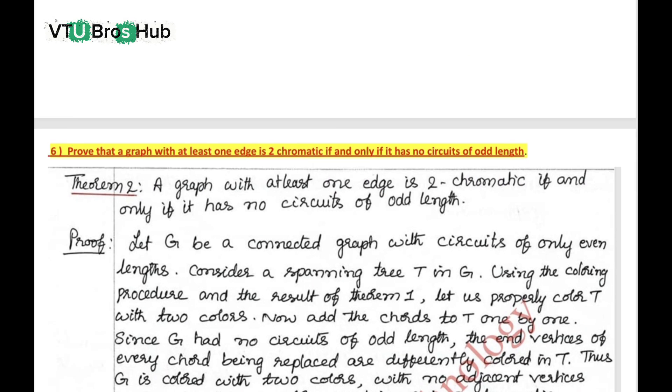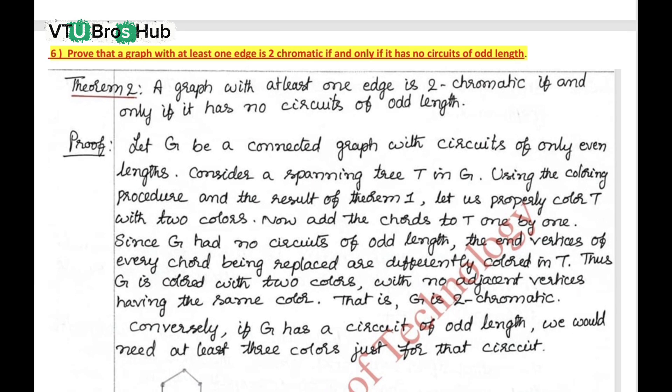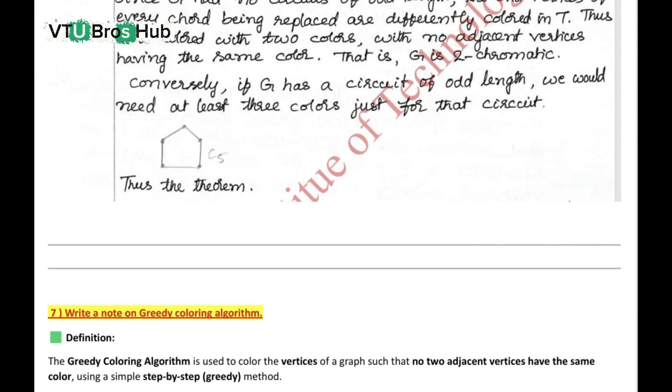Prove a graph with at least one edge is 2-chromatic if and only if it has no odd length circuits. What does this mean? If a graph has no odd cycles, it can be colored with just two colors. But if it has even one odd cycle, we need more colors. The proof for this is very important. It is shown clearly in the answer image now.